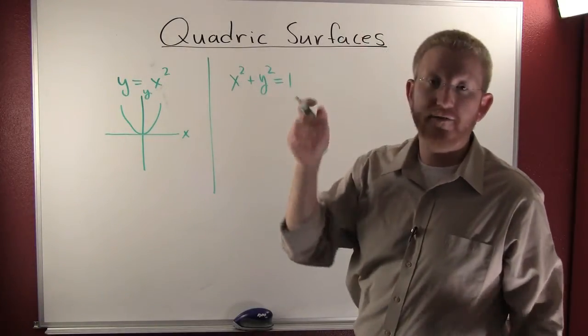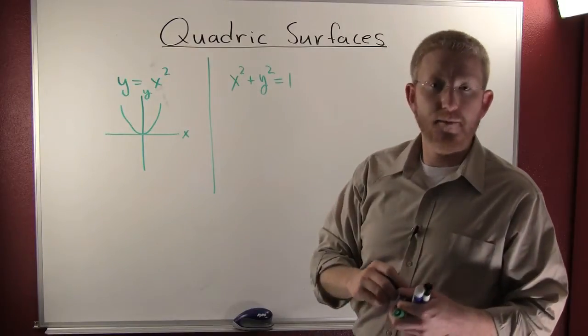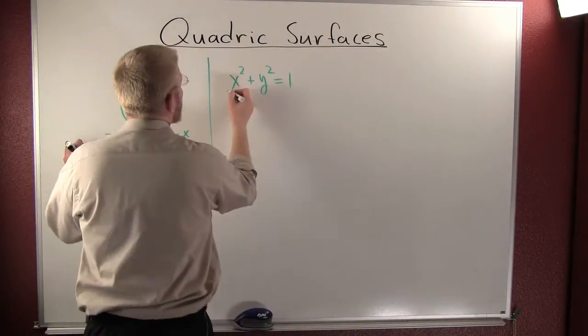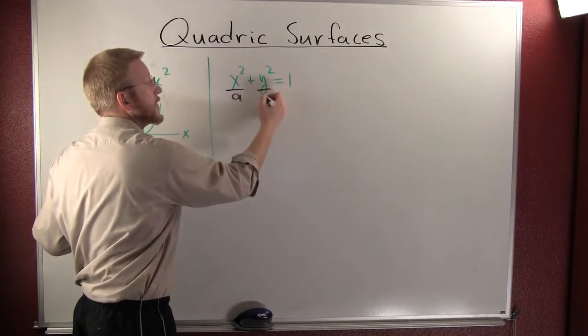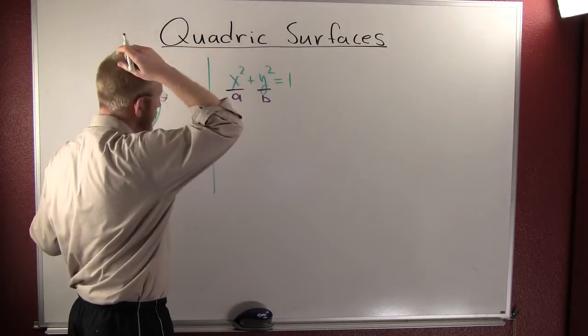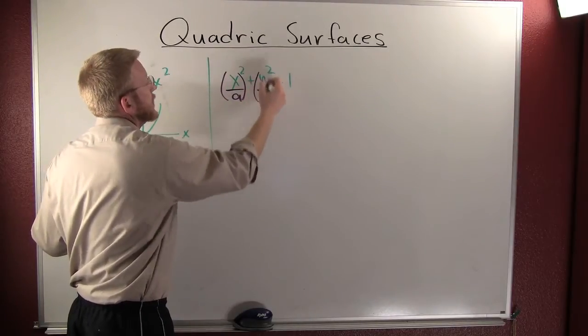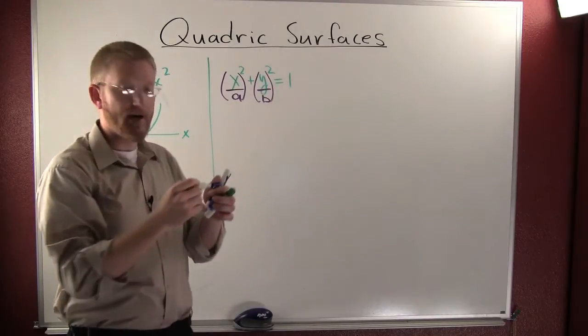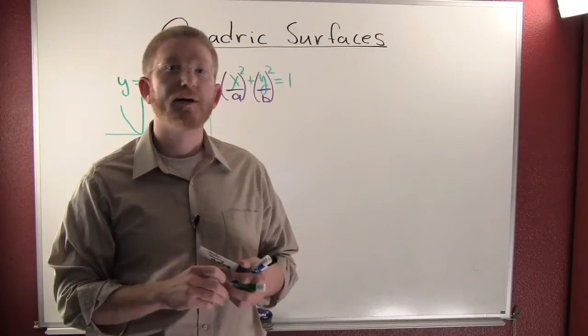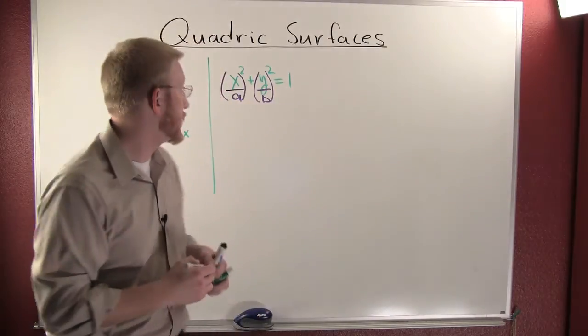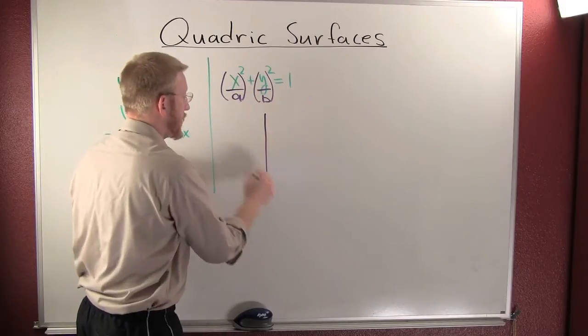We can even go and modify that a little bit further. If we modify that further and make it a little bit more general, if I put x over a and y over b and have those guys being squared. So if we have x over a squared plus y over b squared, this thing is an ellipse. Let's go ahead and draw that now.